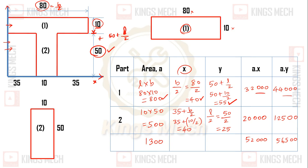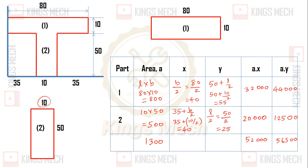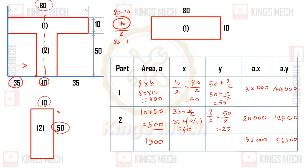For the second part, the base is 10 and length is 50, so 10 into 50, which is nothing but 500. To reach the base from the axis in the direction length, we need 35 mm. The total length is 80, and the flange length is 10, which is nothing but 80 minus 10, equal to 70. Since the flange is identical, we divide by 2, giving 35.